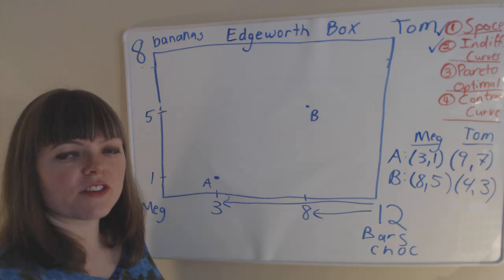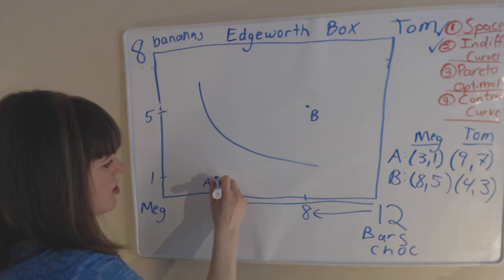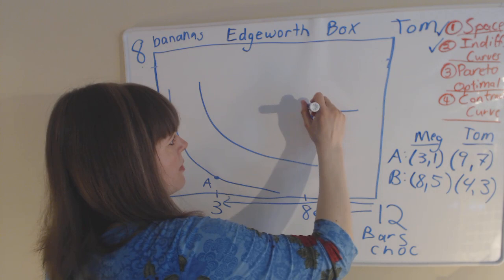How do we understand indifference curves in this map? Well, for Meg, indifference curves are just pretty normal. Meg is sitting here on this axis like we're used to, so her indifference curves just look like normal and concave indifference curves. So Meg's indifference curve through point A might look something like this. And then Meg's indifference curve through B might look something like that.